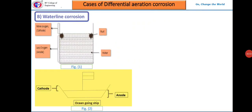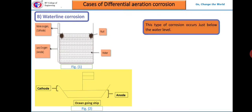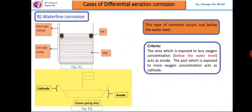Waterline corrosion is a case of differential aeration corrosion which is more common in ocean-going ships and water storage tanks, where most of the metal is always under water. As seen in the figures, corrosion of a metal occurs just below the waterline, referred to as waterline corrosion. Whenever a metal is partially covered by water, differential aeration corrosion occurs.